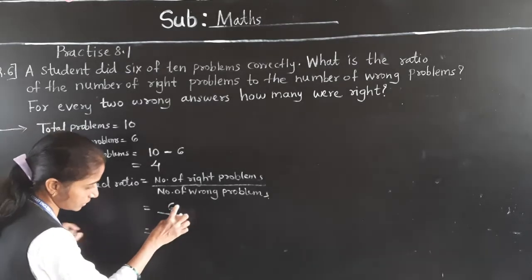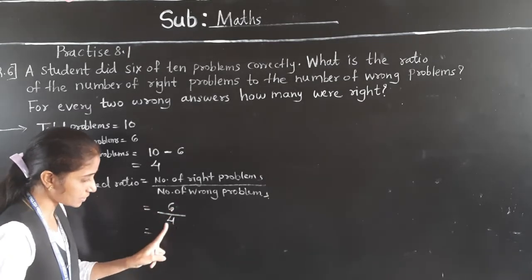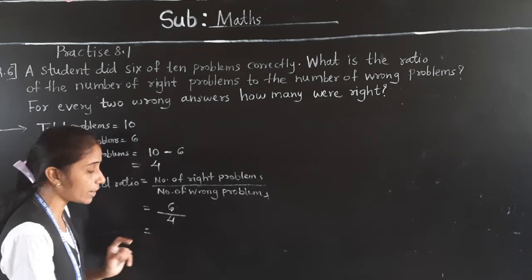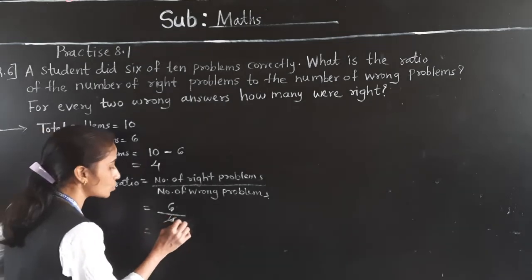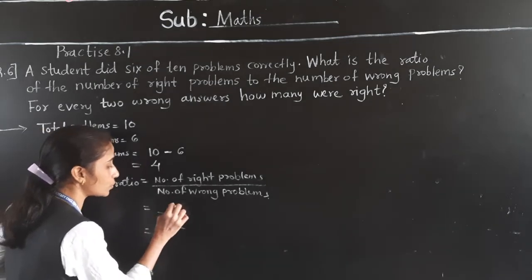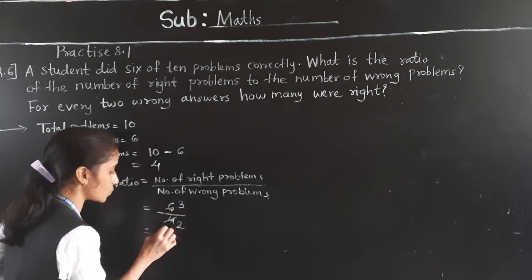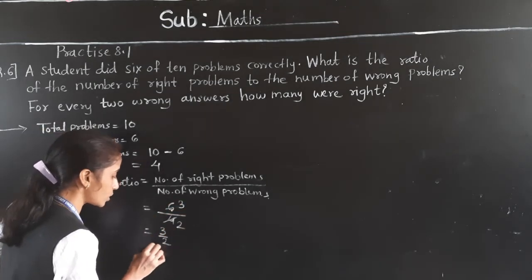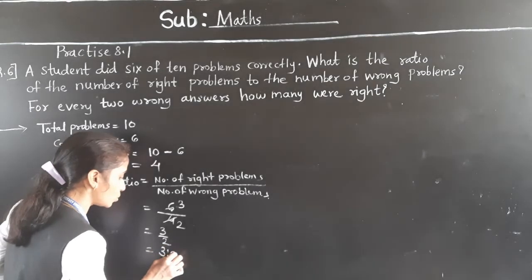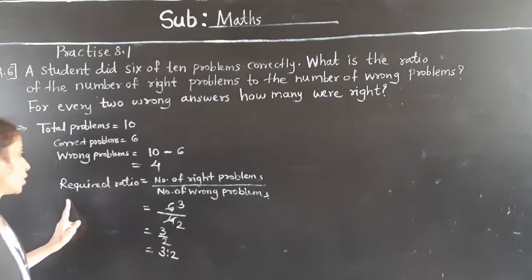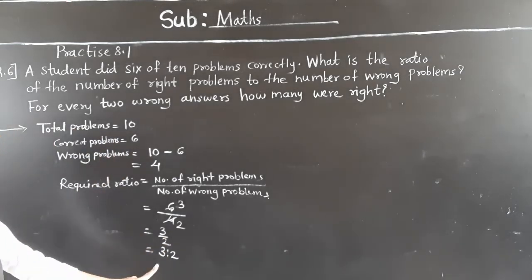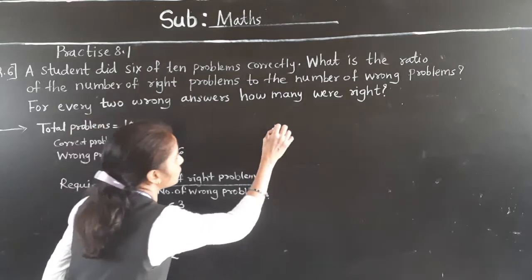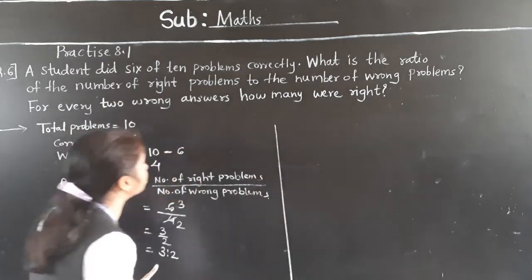Both numbers are divisible by 2. 2 twos are 4, and 2 threes are 6. So 3 upon 2. The required ratio is 3 is to 2.